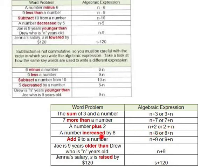Seven more than a number, a number plus two, a number increased by eight, add nine to a number, Joe is nine years older than Drew who is n years old, and Jenna's salary is raised or increased by a hundred twenty dollars, so that means it's going to be added: the original salary plus a hundred twenty dollars. Your book actually gives you more examples on the page that begins the lesson. I would encourage you to look over those and even maybe write some of those in your notes so that you have that as a handy reference to flip back to.